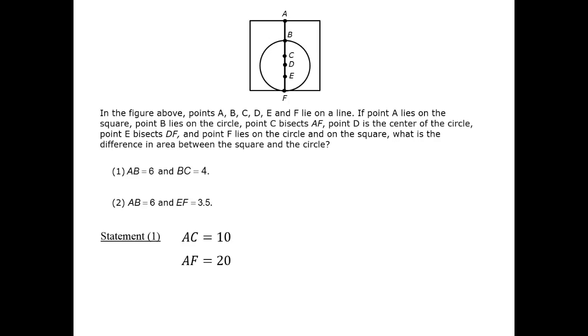That leaves the question of whether we can determine the radius of the circle. Indeed, if AF is 20, and from statement 1, AB is 6, then the diameter of the circle is 14. We are able to determine the area of the circle, and we will be able to answer the question definitively. So statement 1 is sufficient.